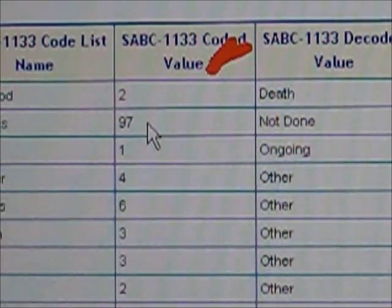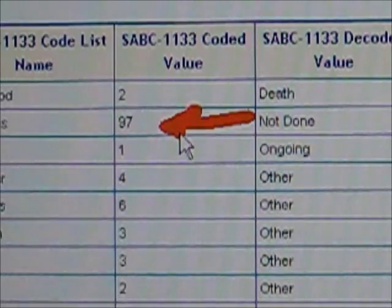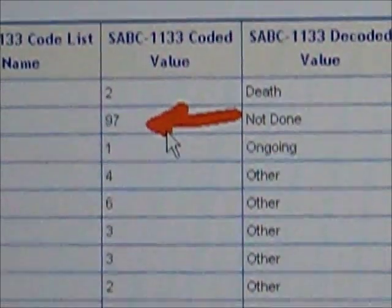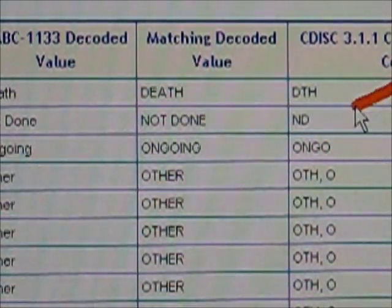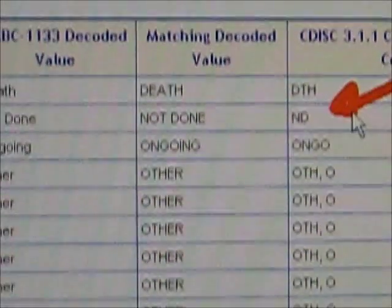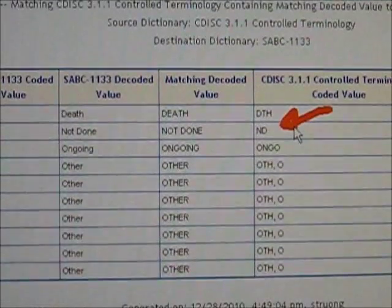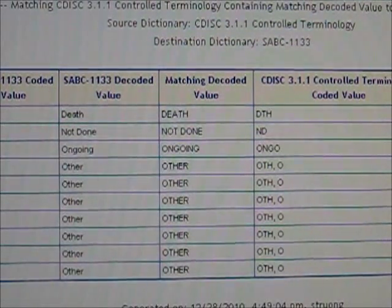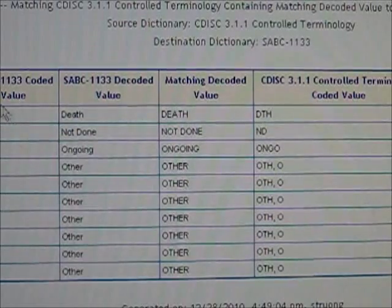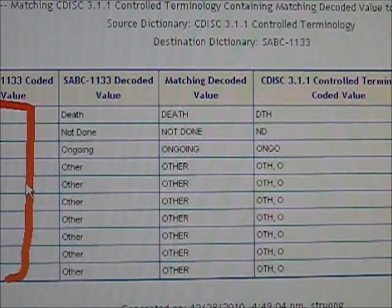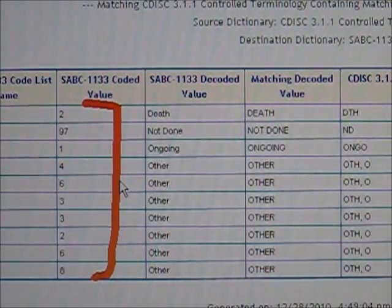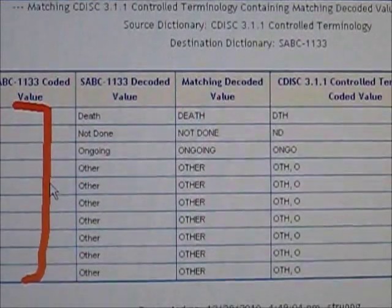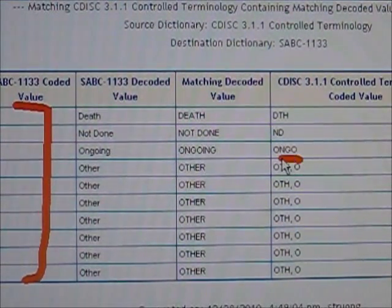For example, a numeric value of 97 is used within the study, but if you were to look for 'not done' in CDISC, they use 'ND'. These are examples where the decoded values have matches but the coded values do not match. This is when you should consider changing your coded values, at least during the submission, so that the DefineXML is documented correctly and the controlled terminologies have the right coded values.